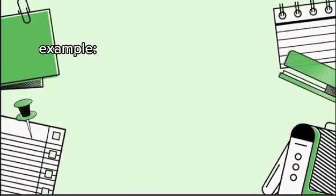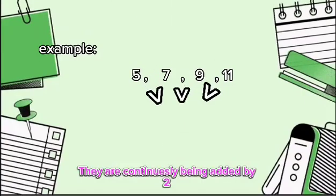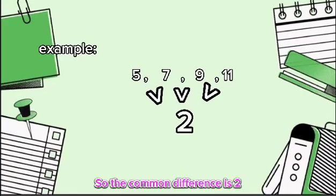Here's an example: 5, 7, 9, 11. They are continuously being added by 2, so the common difference is 2.